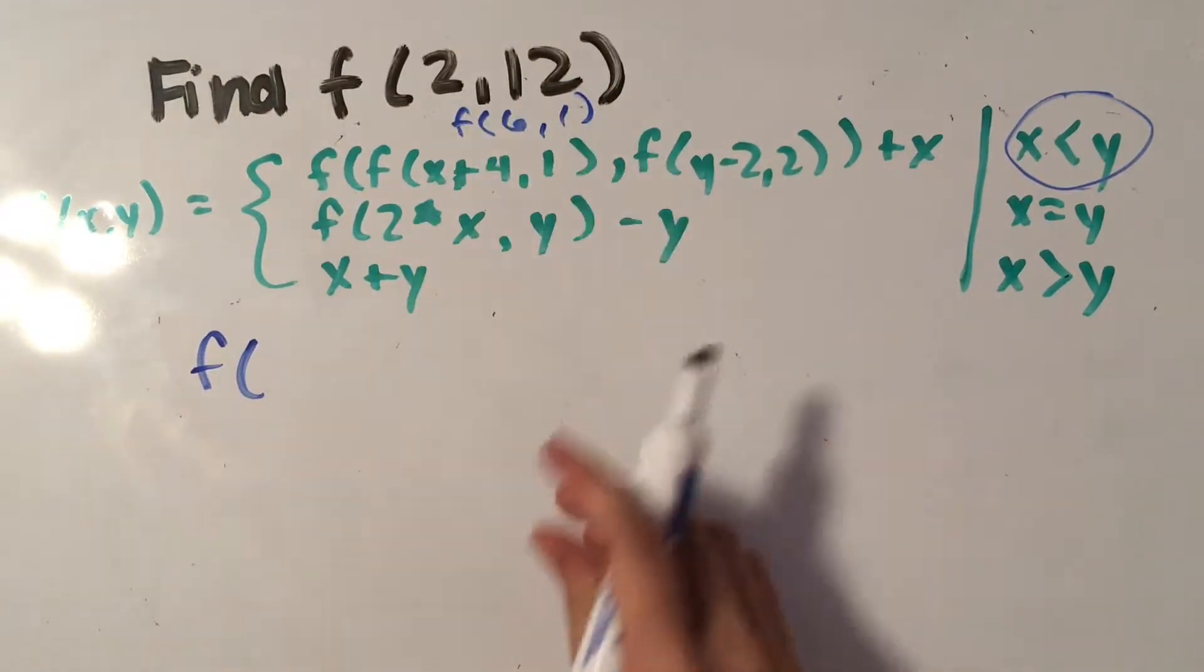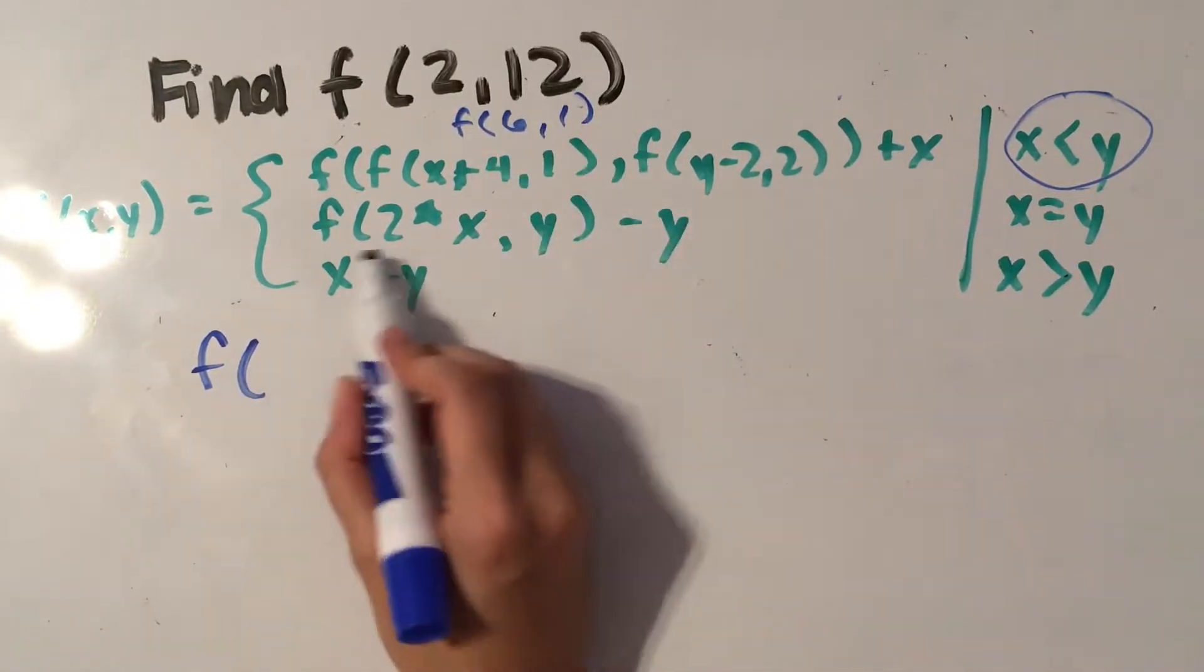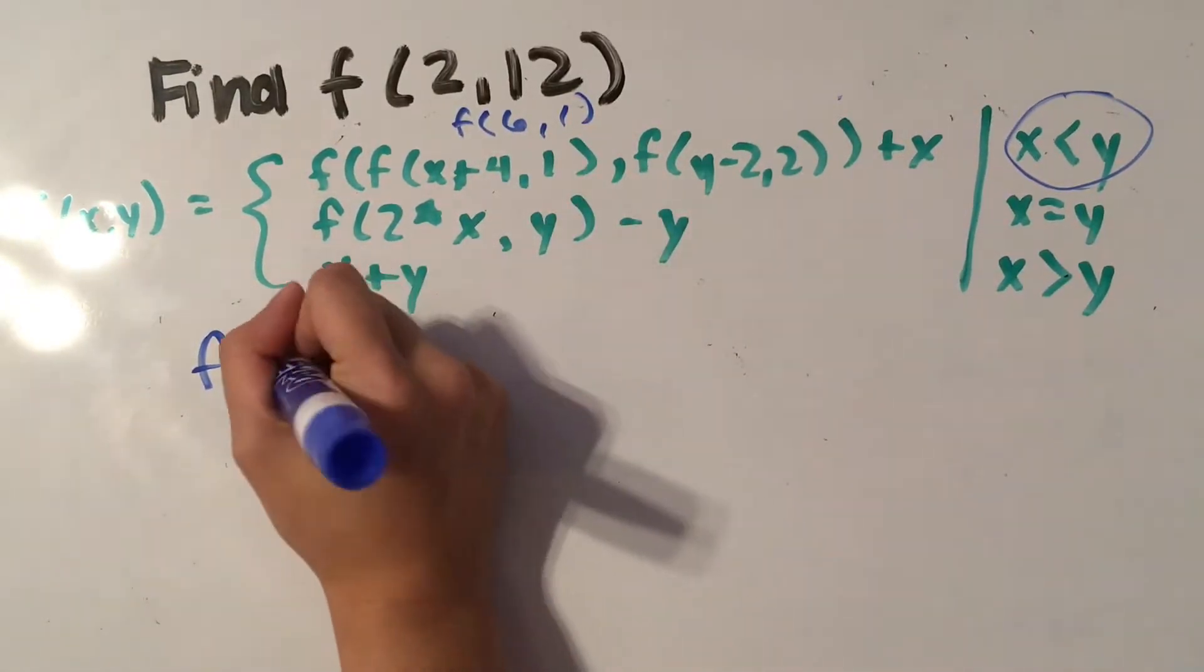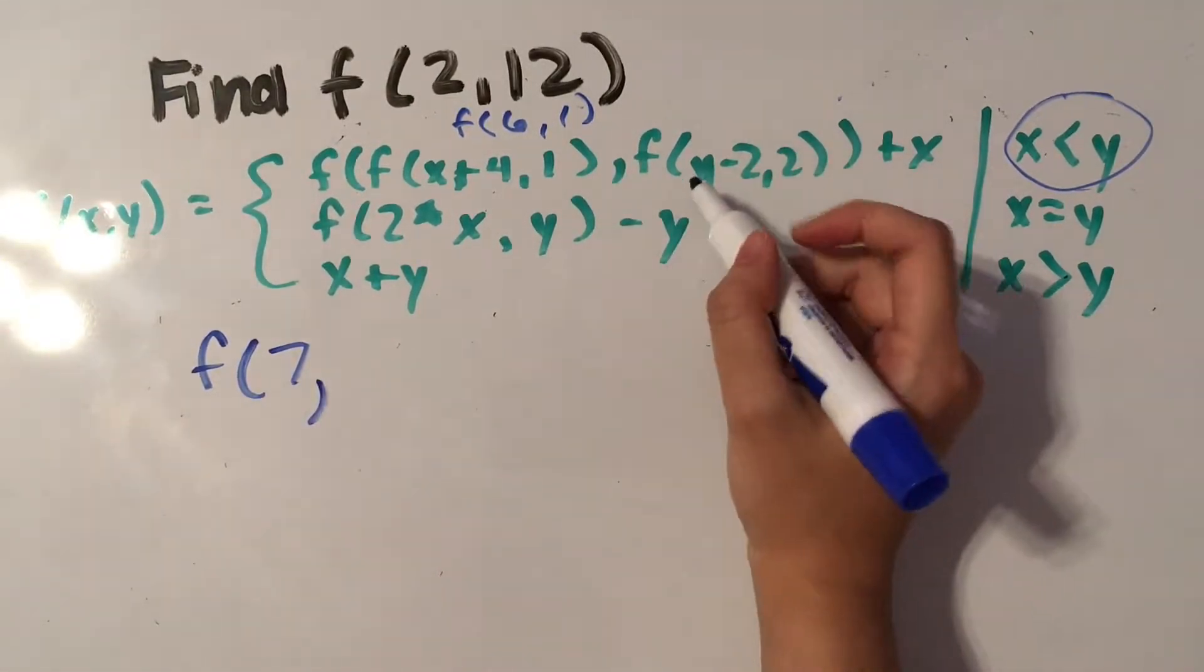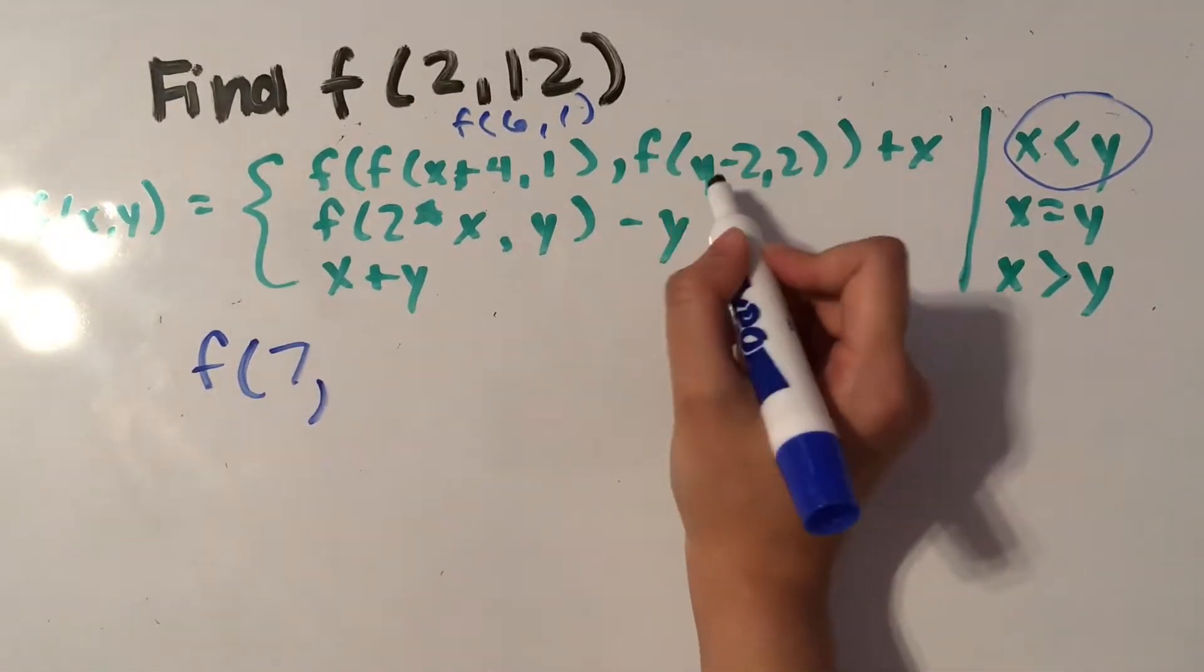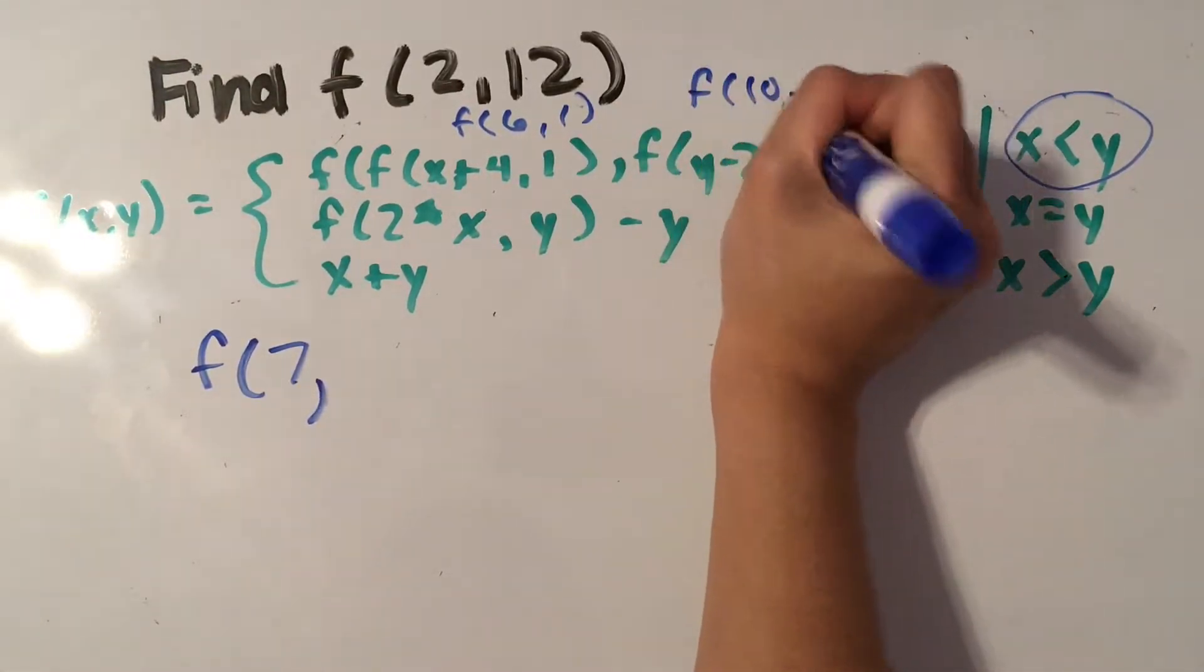So f of 6 comma 1, I can see that x is greater than y in this situation, so we're going to add both x and y which will give us 7. And then we have a comma, and then we have f of y minus 2, so 12 minus 2, which is f of 10 comma 2.